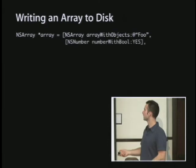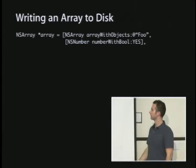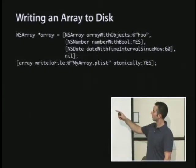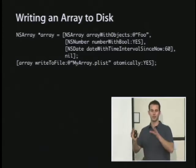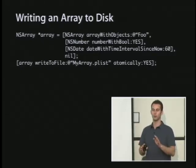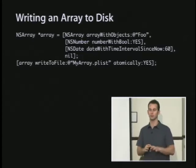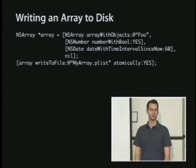When you want to write an array, you create an array with objects — like a constant string, an NSNumber with bool YES, and a date — then write it out using writeToFile atomically. Atomically means the OS writes it first to a temporary file and then moves it into place, so if the iPhone ran out of battery power you wouldn't lose data — you'd either have the old data or the new data, no bad intermediate state.